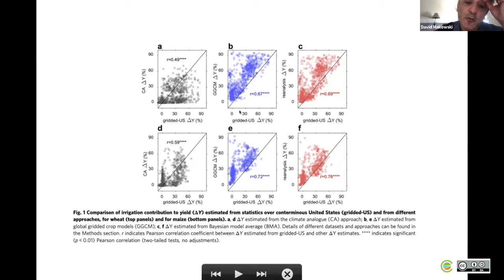On the contrary, the crop models show a stronger correlation, but they are strongly biased. They strongly overestimate the yield gaps. The result in red of the Bayesian model averaging technique shows a stronger correlation and an intermediate level of bias. This confirms that this approach, Bayesian model averaging, is a good compromise. It's a good approach to combine the advantages of climate analogues and the ensemble of crop models.